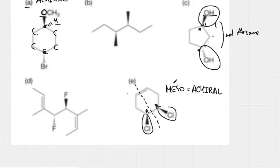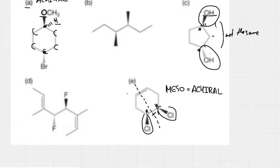A meso compound is a molecule that has two or more stereogenic centers but also has a line of symmetry that cuts the molecule into two identical halves. Molecule E had two stereogenic carbons yet has a plane of symmetry through the middle producing two identical halves. Therefore compound E is meso, and a meso molecule is always achiral.